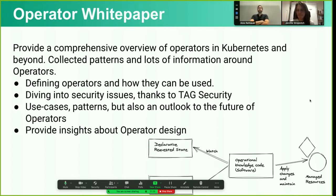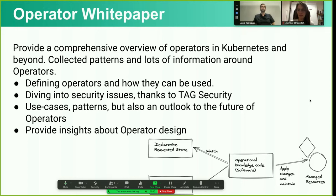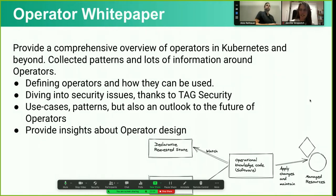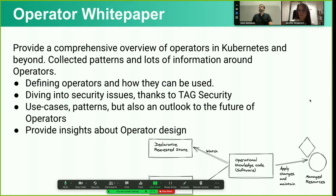This is a great example of Tag App Delivery collaborating with other tags — in this case, tag security. This started from the TOC asking Tag App Delivery: we have a short definition of the operator pattern in Kubernetes, but do we really know what an operator is and what it isn't? Many people are amazed that you could build an operator not running in Kubernetes. If you find anything you don't like, all our white papers are in our GitHub repo, so you can file PRs. We try to work collaboratively in the open.